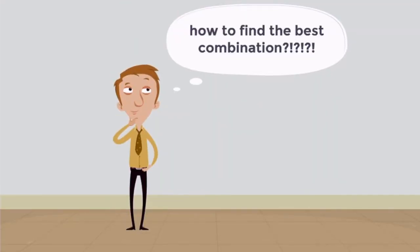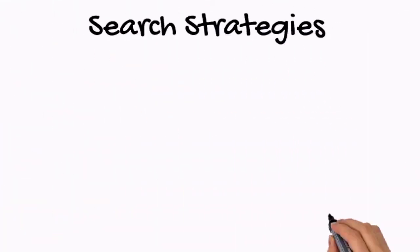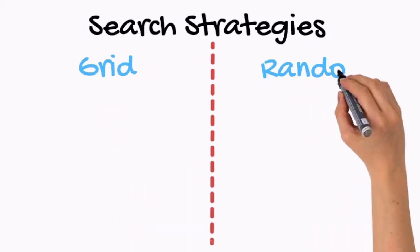The question now is, how to find the best combination of hyperparameters to get the best model? There are two simple and easy search strategies to face this optimization. One is grid search and the other one is random search.